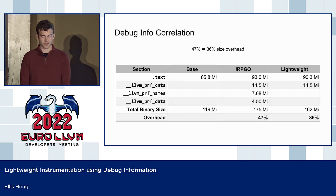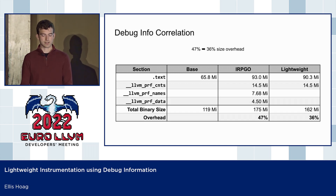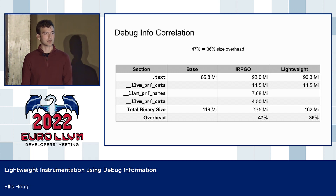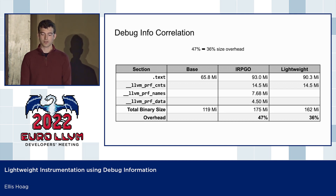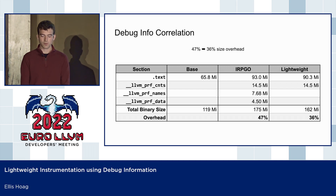Here's the same table shown earlier but with an added column for lightweight instrumentation. Looking at the text section, lightweight instrumentation has nearly three megabytes less overhead than IRPGO due to function dead stripping. The LLVM prof names and LLVM prof data sections are completely omitted from the binary. Overall, this gives us a 10% reduction in binary size overhead with no loss to profile data and no performance regressions.